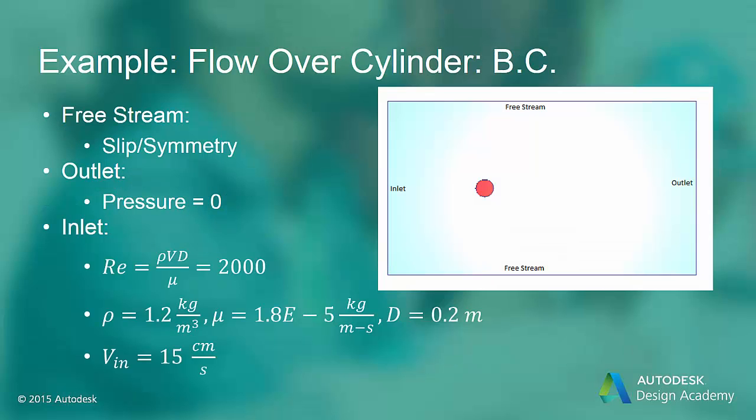Flow across a cylinder is an external flow example. The free stream boundary is far from the cylinder surface, where the flow slips with the free stream air flowing past, so we assign a slip symmetry boundary condition on this boundary. The outlet is marked by a pressure of zero. At the inlet, we assign a velocity that will make the Reynolds number based on cylinder diameter equal to 2000, which is in the range of Reynolds numbers that should shed vortices.